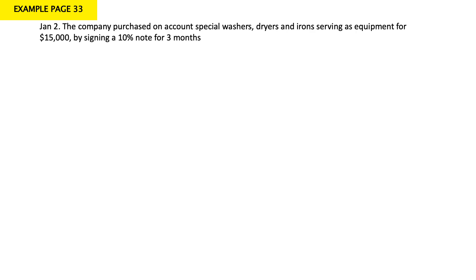January 2: the company purchased, on account, special washers, dryers, and irons serving as equipment for $15,000 by signing a 10% note for 3 months. There are two keywords to note. First, 'on account' means we did not pay for the equipment — we have to pay in the future, so this is an account payable. However, they signed a 10% note, so we cannot call it account payable anymore. We call it notes payable.